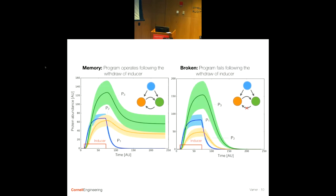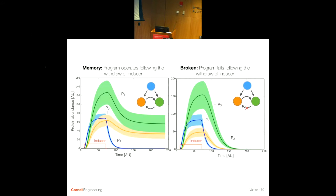Looking at some quick simulations of this memory circuit: if we have the memory circuit and I withdraw the inducer — shown in red at the bottom — protein 1 will decay. In a growing cell, it will dilute and the message will eventually decay. But proteins 2 and 3 stay activated even in the absence of inducer, so there is a memory. If I break any component of that positive feedback, the program fails. We use this simple structure to model our HL-60 cells.